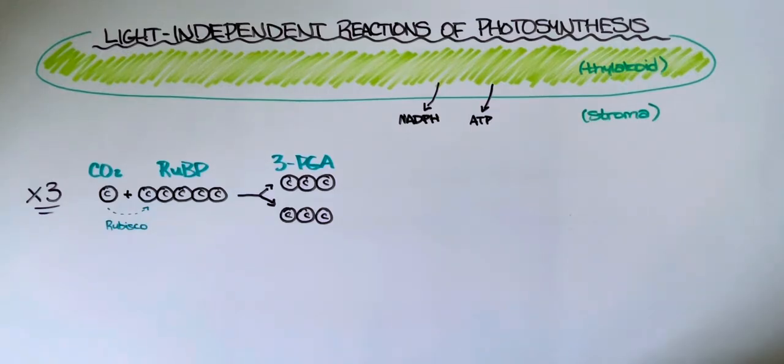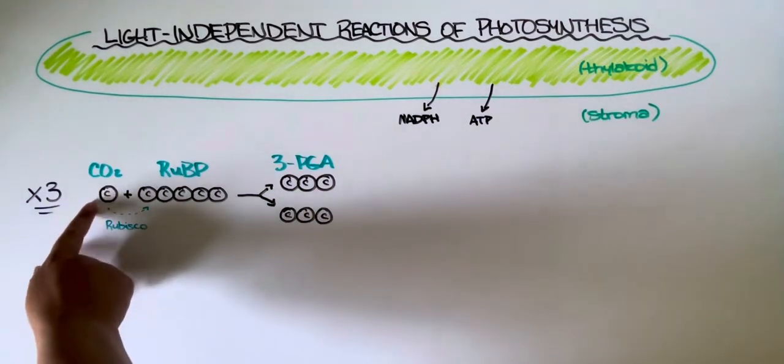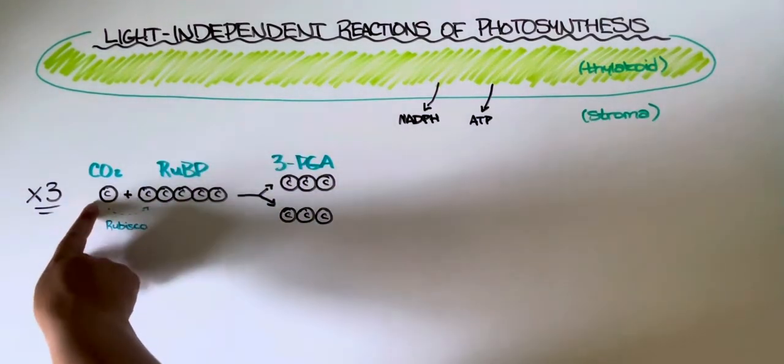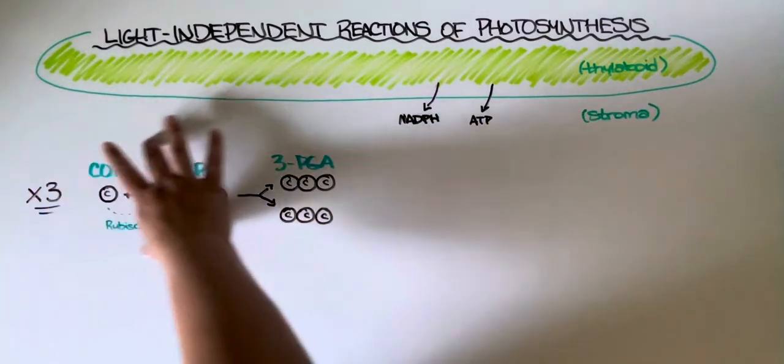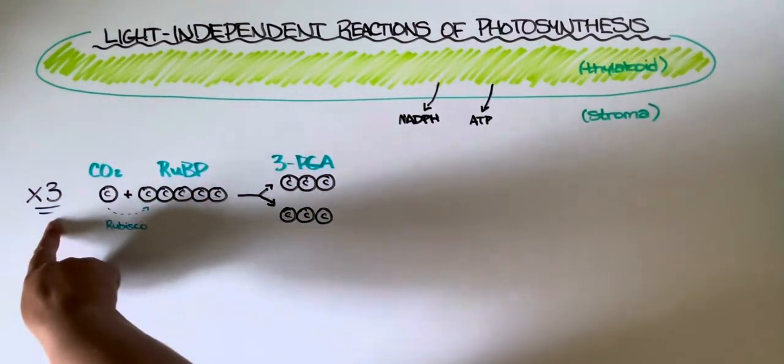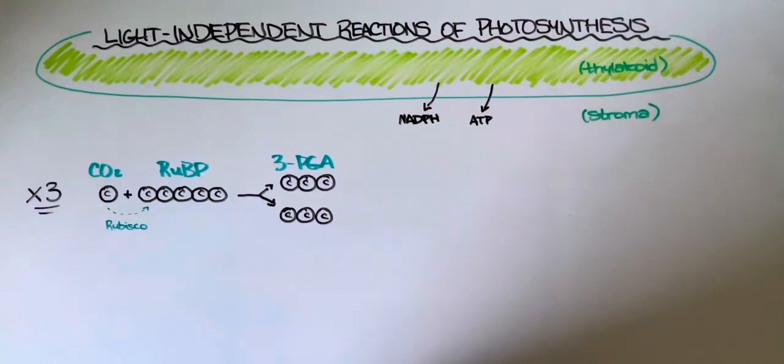To begin the light independent reactions, you actually need some carbon dioxide. Three molecules of CO2 are required to kick off this cycle, which is sometimes known as the Calvin cycle. I've just drawn out the reaction once, but we do need to keep in mind that this is actually taking place three times.